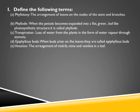Define the following terms. Phyllotaxy: the arrangement of leaves on the nodes of the stem and branches is known as phyllotaxy. There are three types: alternate phyllotaxy (one leaf at each node), opposite phyllotaxy (two leaves at each node), and whorled phyllotaxy (three or more leaves at each node).